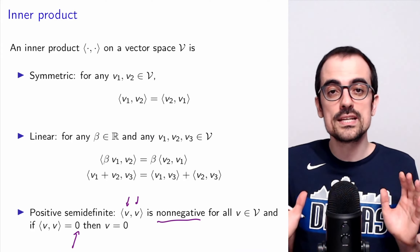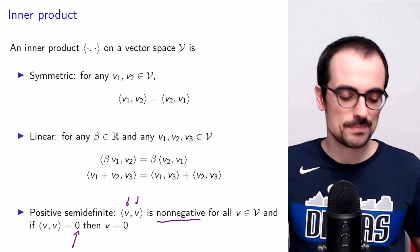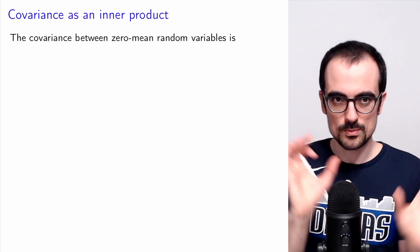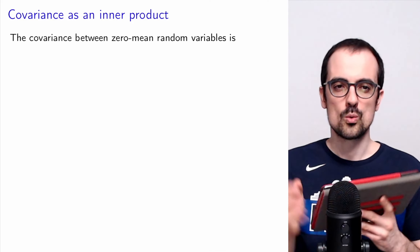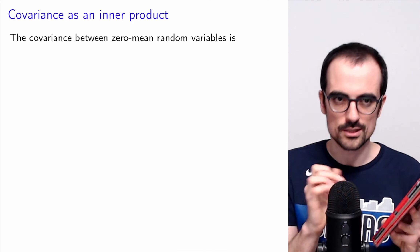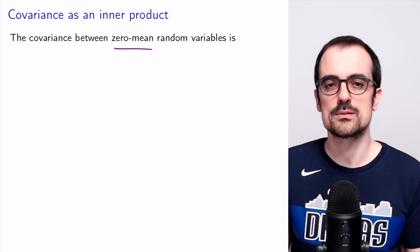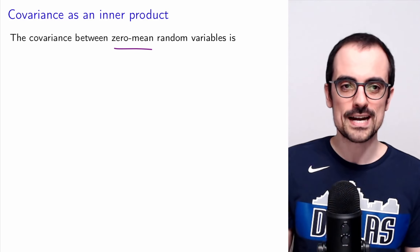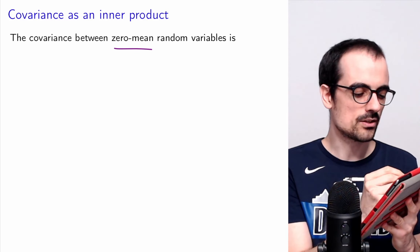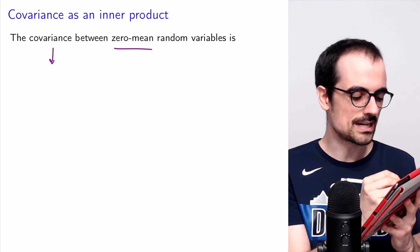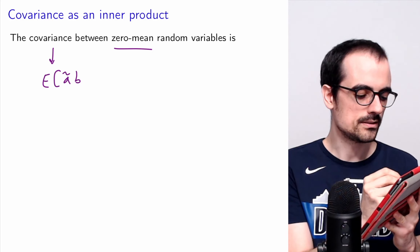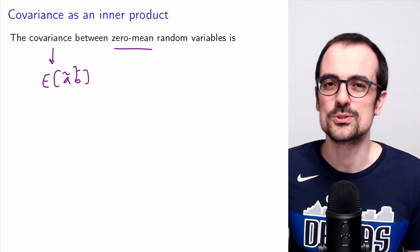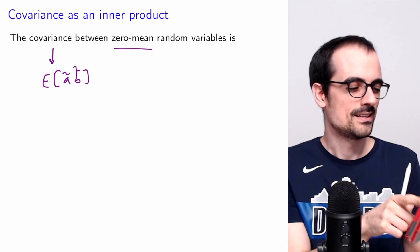We're going to have a valid inner product between random variables, but we need to center the random variables for this to be an actual inner product. Assuming we're working with zero-mean random variables, the covariance is an inner product between random variables. Think of the covariance between zero-mean random variables — it's just the mean of the product. So the mean of the product is an inner product, which is not a huge surprise.